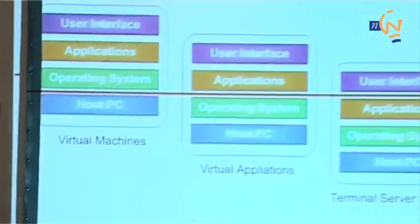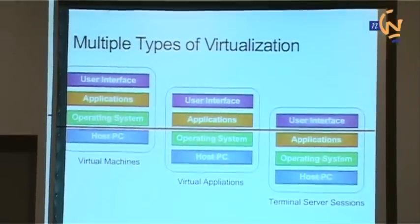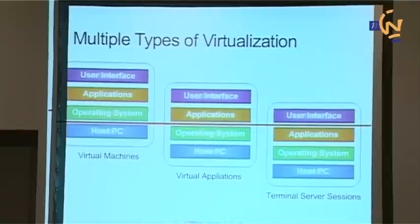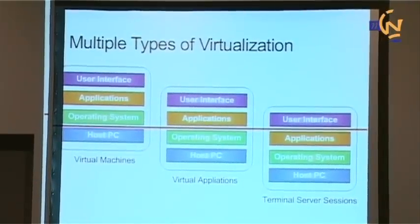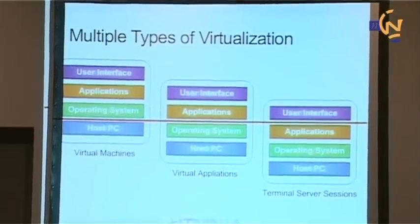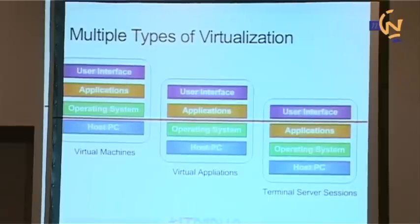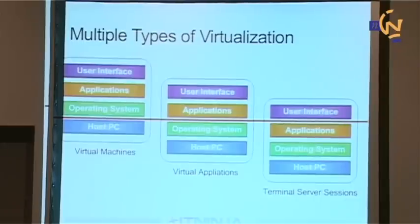Moving to virtualization: it can get confusing because it's such a big term that encompasses so much. Even just focused on applications, virtualization can mean many different things. Machine virtualization is full machines running in a virtual space like Hyper-V or ESX Server — the whole OS is virtualized on top of the hardware. Application virtualization is when just the application is running locally with local system devices but is segmented from the OS and from each other. There are a lot of benefits in that — here we're talking about products like ThinApp and AppV.